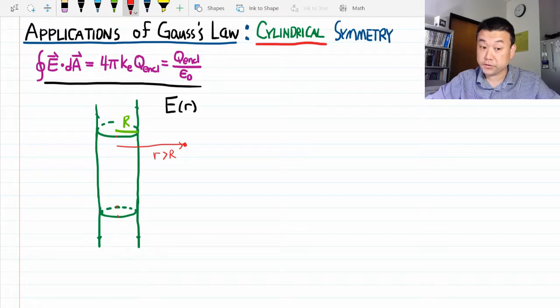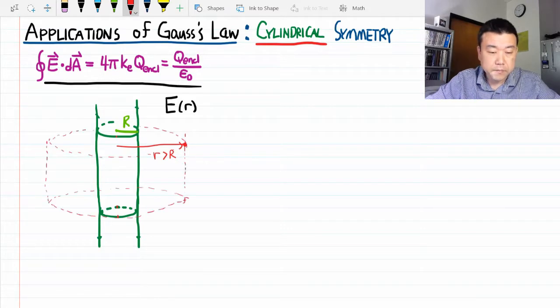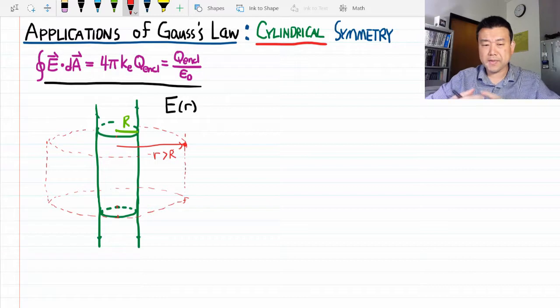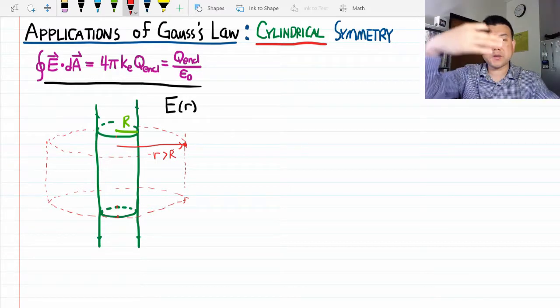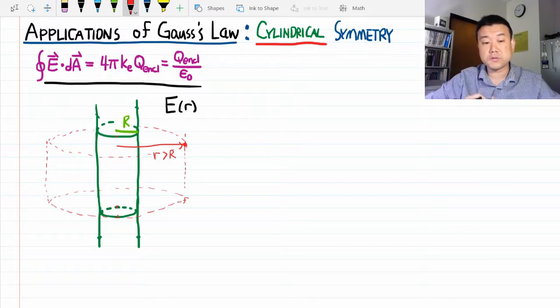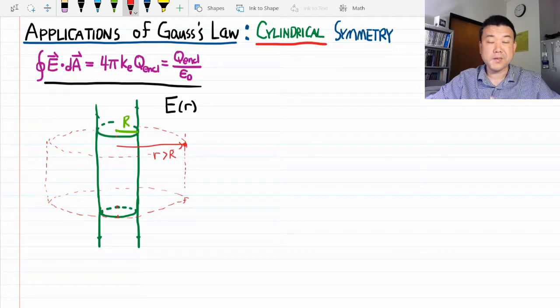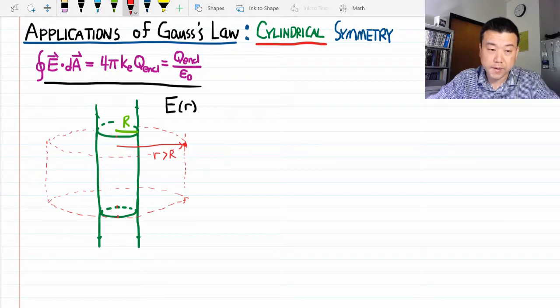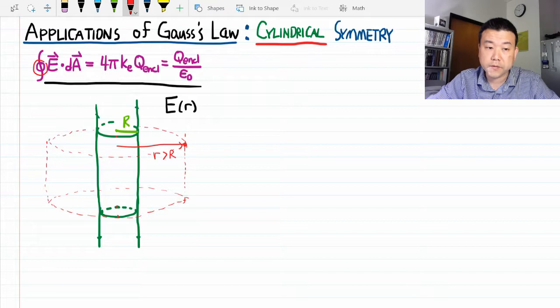I have cylindrical symmetry, so I should pick a cylindrical surface. Here's a wrinkle: we can't have this Gaussian surface be infinitely long, because then it won't be closed. The key part of using Gauss's Law is that it only applies to a closed surface.